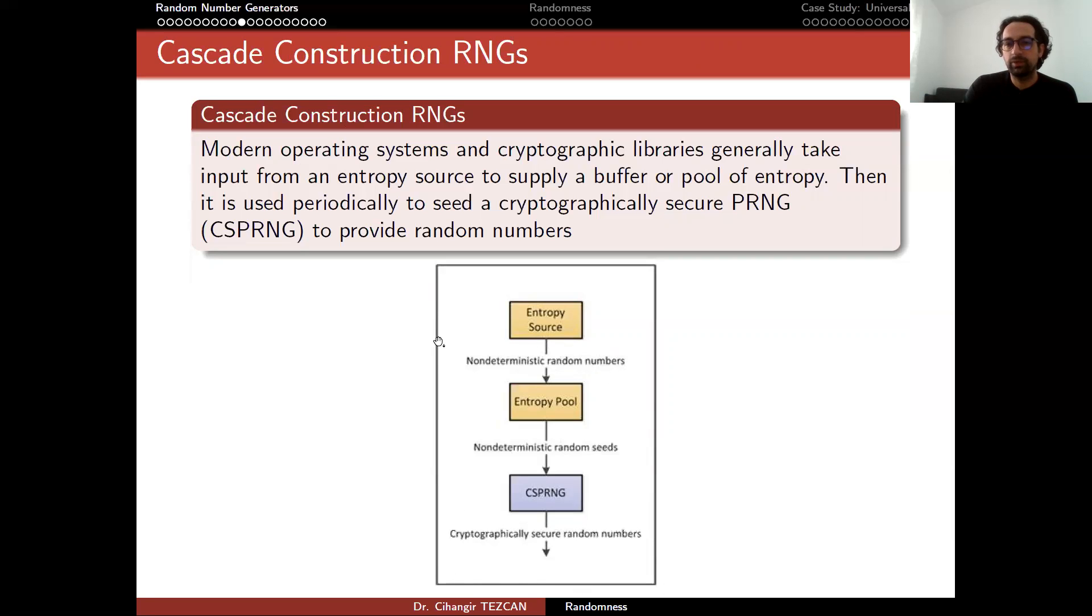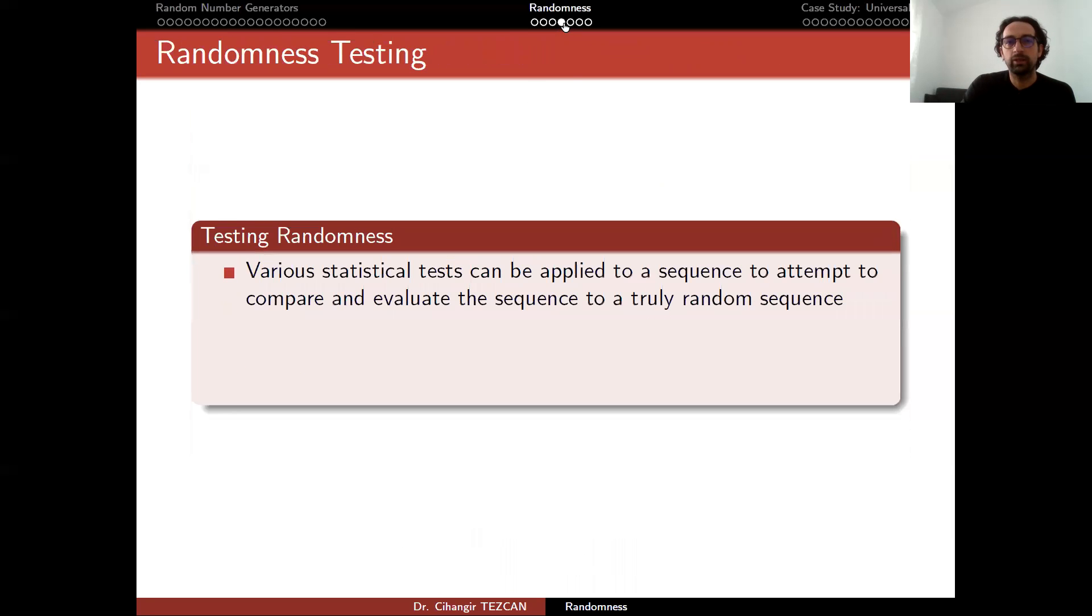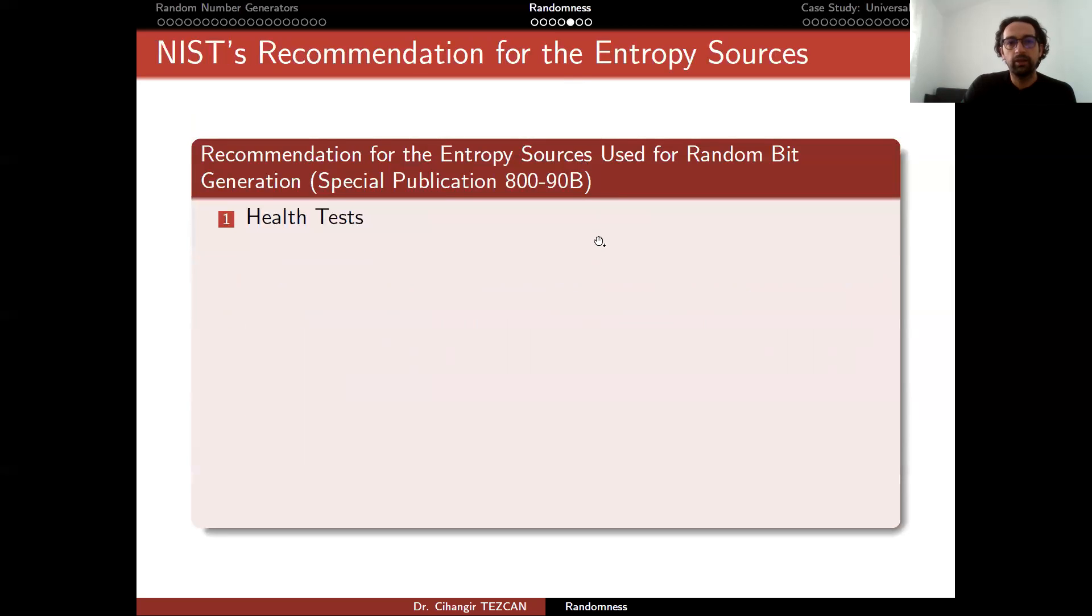So your statistical randomness test should be applied here. But you should also apply some entropy test here to check if your entropy source is good. So NIST has two documents. One of them for this entropy source and one for the statistical randomness tests. So we will first look at this one and then move on to the other one. Let's look at NIST recommendation for the entropy sources.